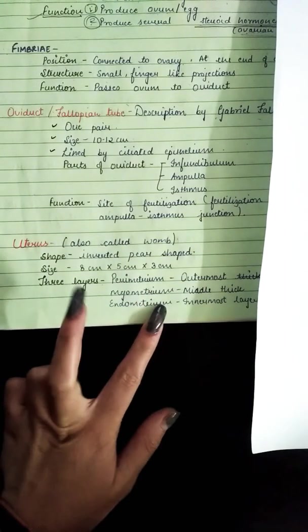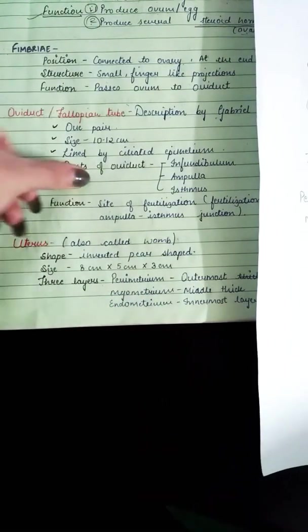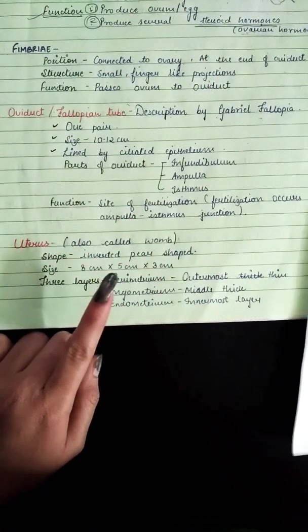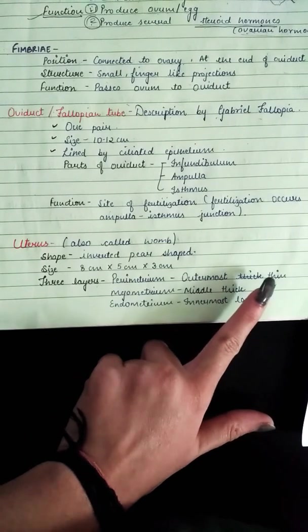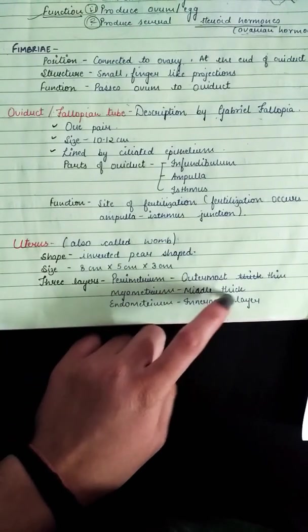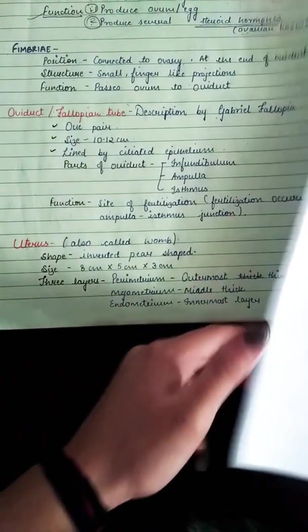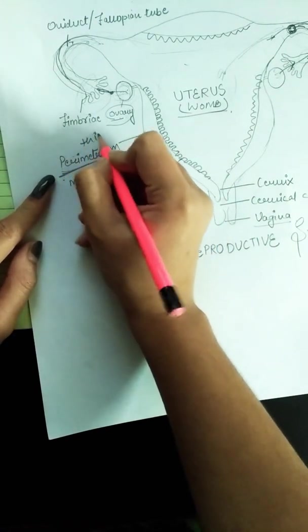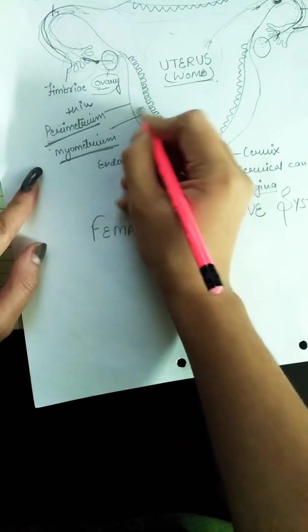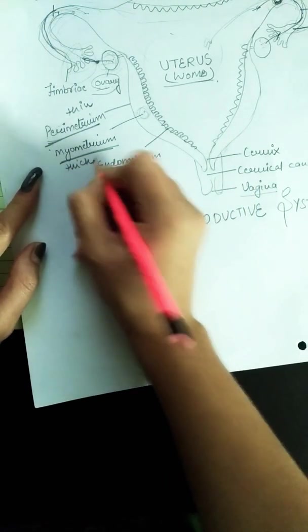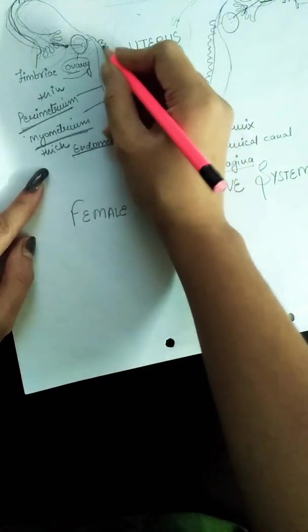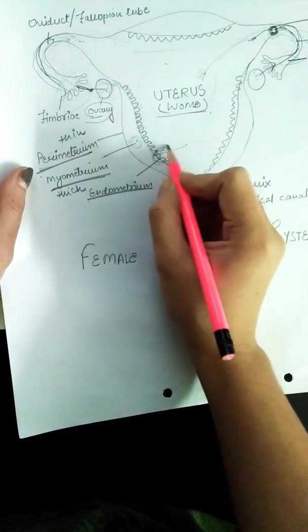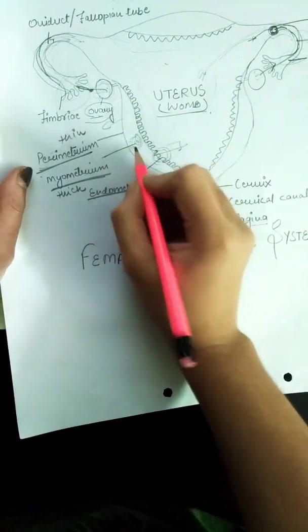The uterus is inverted pear-shaped. Its size is approximately 8 by 5 by 3 centimeters. The uterus has three layers: the outermost layer is the perimetrium, which is thin; the middle layer is the myometrium, which is thick; and the innermost layer is the endometrium.